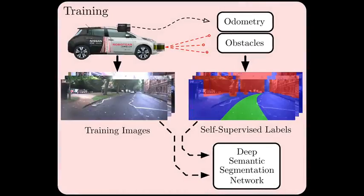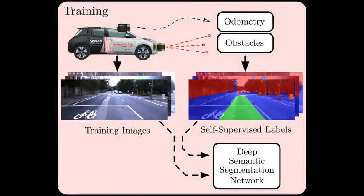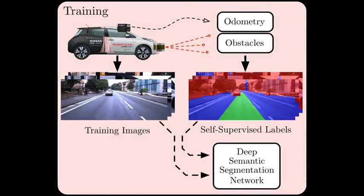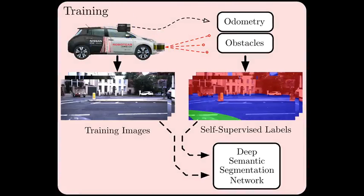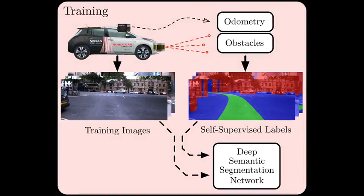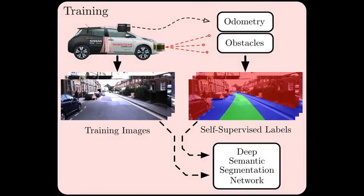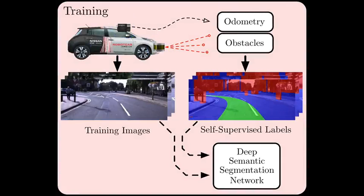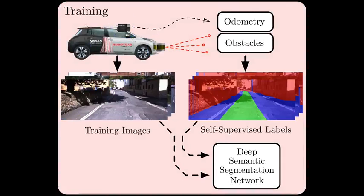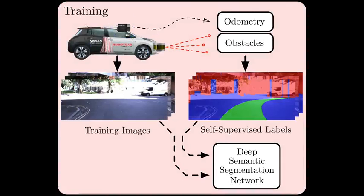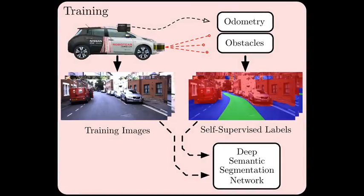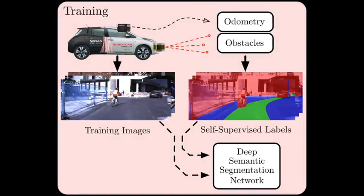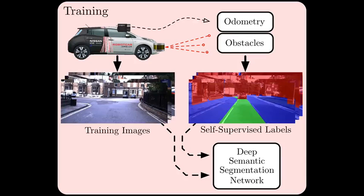To train our system we use a data collection vehicle with a stereo camera and a lidar scanner. These sensors provide us with both odometry and obstacle data, which we use to automatically label images with the proposed path and obstacles. With this approach we can generate vast quantities of images and labels in order to train a deep semantic segmentation network.